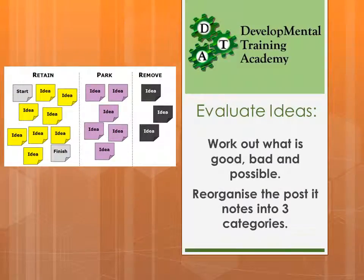Once you've brainstormed a list, you need to evaluate your ideas — work out what's good, what's bad, and what is actually a possibility in the future. We tend to separate it into three categories: ideas to retain, ideas to park for later, and ideas to remove altogether. We then reorganise the post-it notes and fit them into those three categorisations.